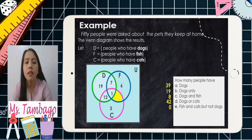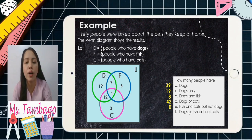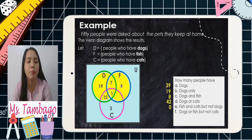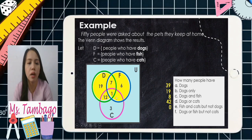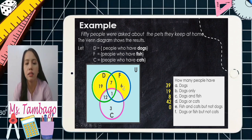Letter F: dogs or fish, but not cats. 'Or' means union — all elements for dogs and fish. We include the green circle and the blue circle, but not the pink circle (cats). We remove the parts overlapping with cats. So we add only 19, 7, and 6, giving us 32 people who have dogs or fish but not cats.